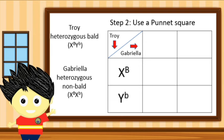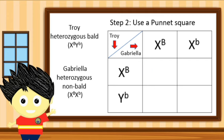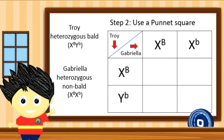Gabriela has identical X chromosomes with a superscript of capital letter B and small letter b. For the first box of our Punnett Square, the gamete combination will be identical X chromosomes with a superscript of identical capital letter B, representing a female homozygous bald carrier.